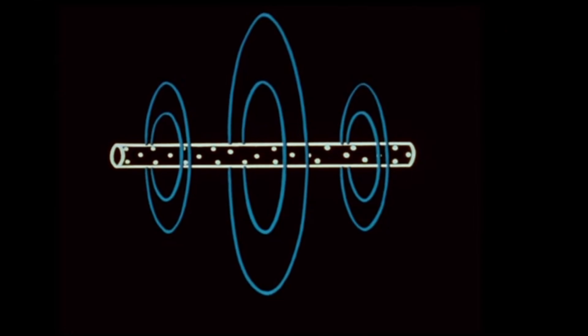This electron flow creates a fluctuating magnetic field. Let us relate the direction of this field to the electron flow. As the electron flow reverses, the magnetic field is at a maximum, and the lines of force are in this direction. When the flow stops, the lines of force collapse.